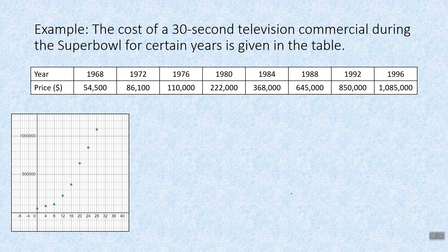The cost of a 30 second television commercial during the Super Bowl for certain years is given in the table. I chose presidential election years starting in 1968. You can see a huge increase here as we go along. So what I did is I took these data values and I used Desmos and I plotted them. So we can see this plot right here and the data, this is the actual cost of a 30 second Super Bowl commercial.